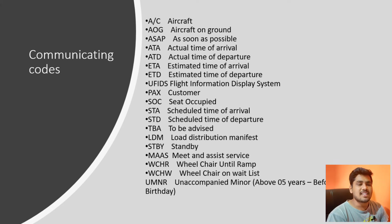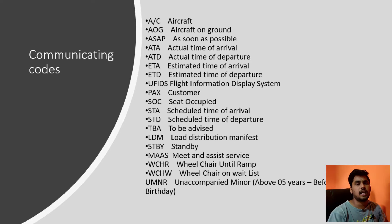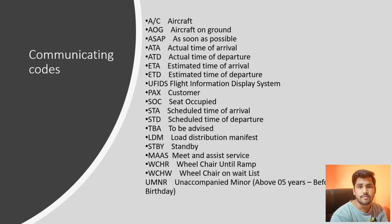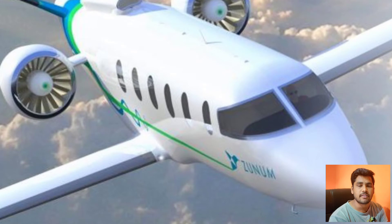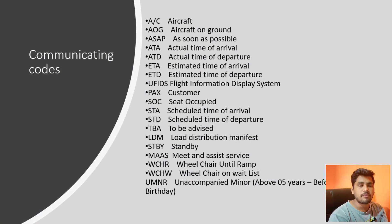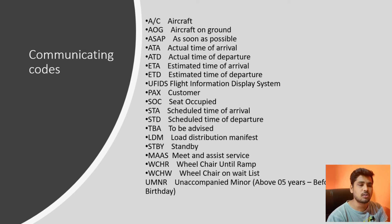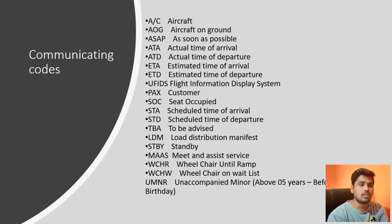The first one is A/C. In general people might read it as 'AC', but in aviation A/C means aircraft. Similarly, AOG is the short form of Aircraft on Ground, so AOG means aircraft on ground. We also have a few three-letter and four-letter communication codes.